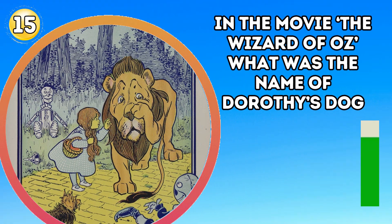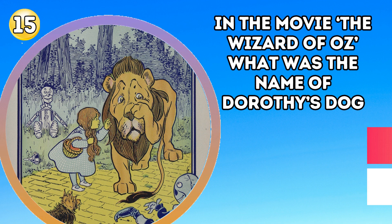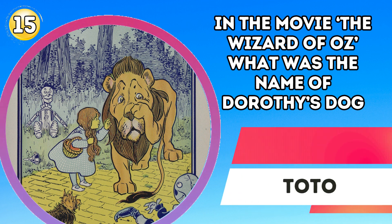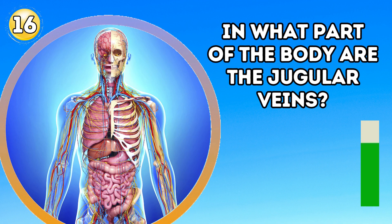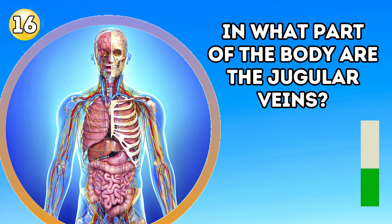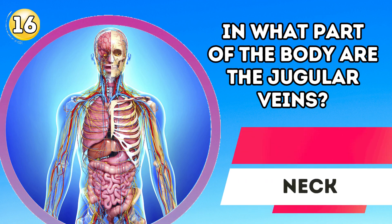In the movie The Wizard of Oz, what was the name of Dorothy's dog? Toto. In what part of the body are the jugular veins? The neck.